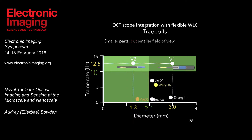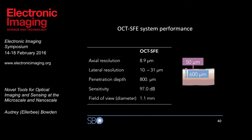To convert the SFE into an OCT imaging scope, we add relevant optics. Our initial version was about three millimeters in diameter, slightly too large for the application. More recently, we've developed a smaller version that meets the correct size requirements. Our current version 2 scope has hope of fitting into the clinical cystoscope. The system has an axial resolution of about 9 microns, sufficient to distinguish the boundaries of these tumors. Most importantly, it has a penetration depth of about 800 microns, which allows us to see into the muscularis layer — where the clinical distinction for treatment occurs.